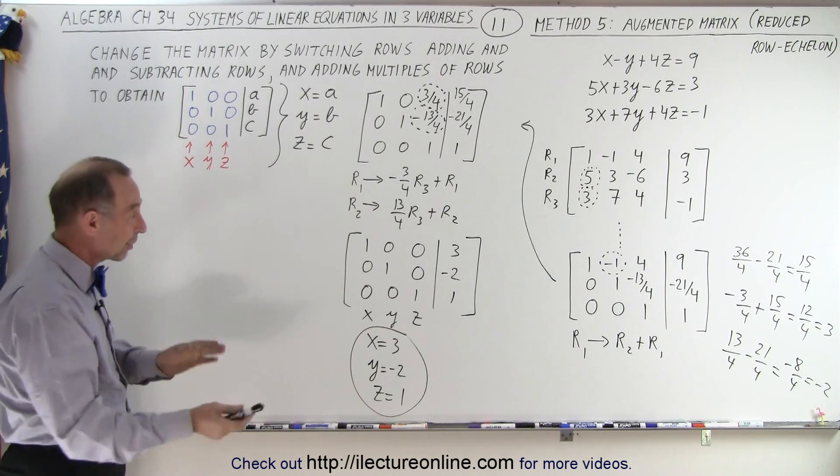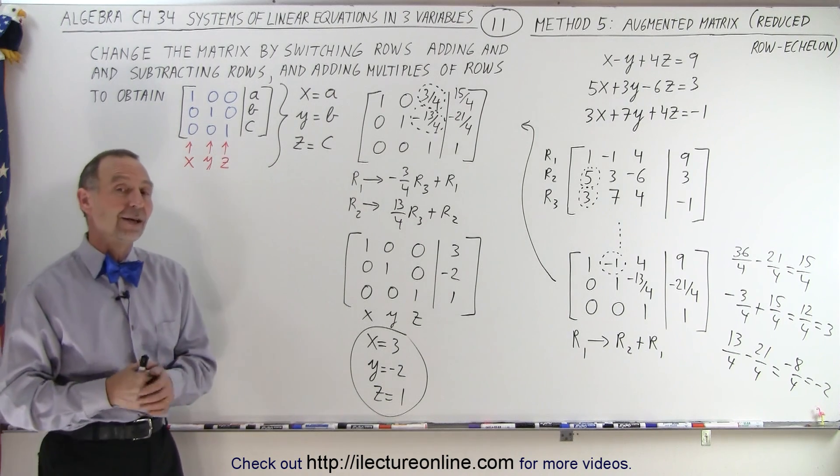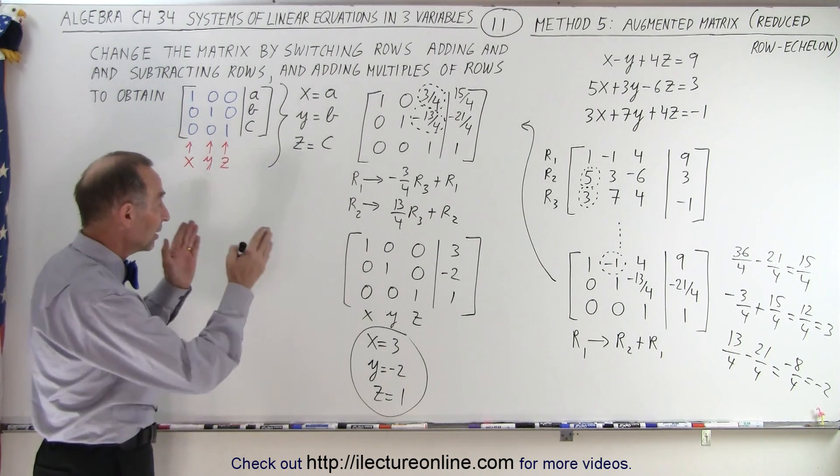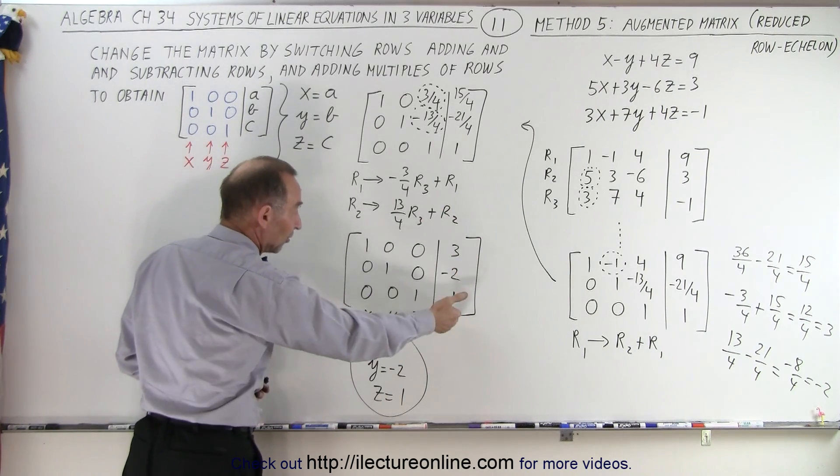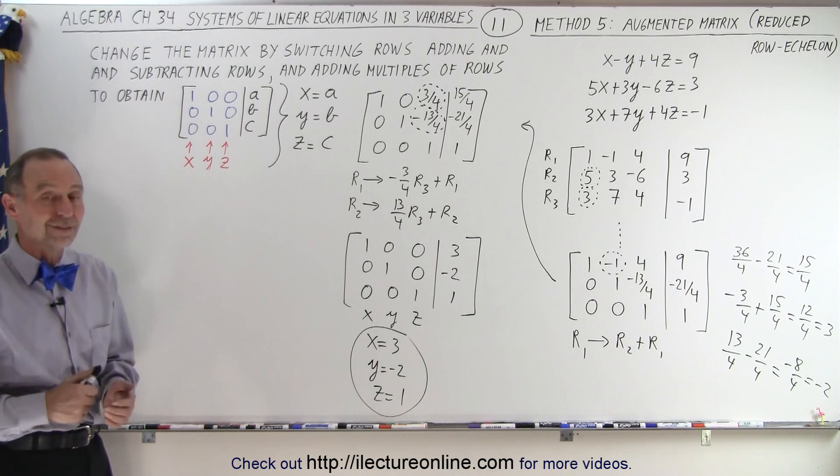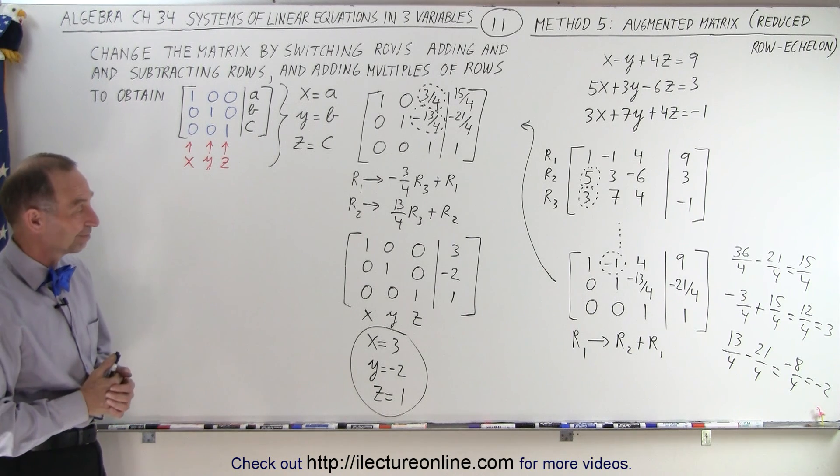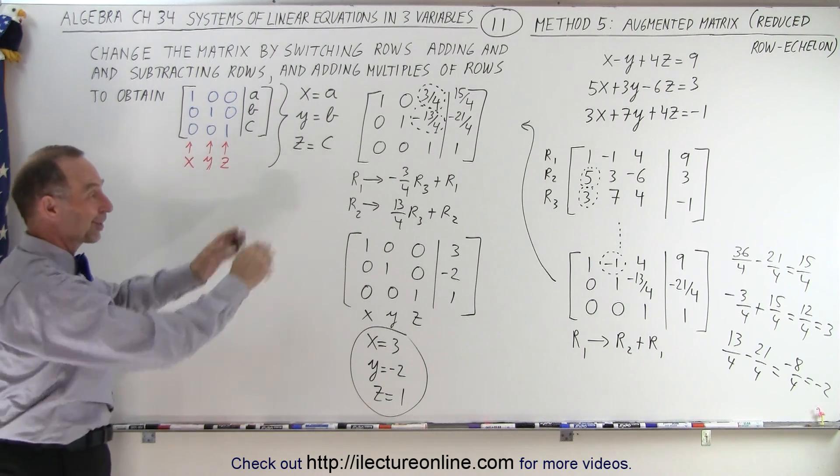Again, the same three results that we got in the previous examples of all the various methods of how to do that. But notice that once you have it in the reduced row echelon form, you just read the results right there in the right side of that matrix. And that is how that's done. Just have to get there, take it right off.